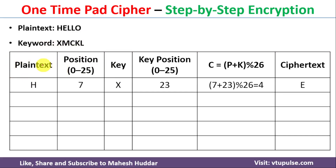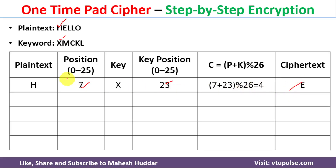First we take each plain text letter and its position, then the corresponding keyword letter and its position. Applying the encryption formula, the first plain text letter is H at position 7. The first keyword letter is X at position 23. So 7 + 23 mod 26 = 4, and the letter at position 4 is E.